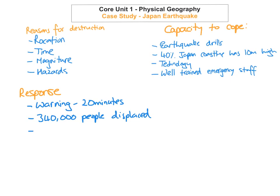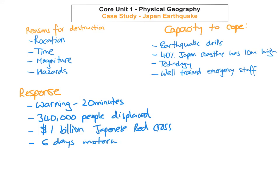They received up to 1 billion in donations from the Japanese Red Cross, which shows their ability to respond and help in a natural disaster. Within six days, they had the motorways cleared, which again shows their sheer response capacity and ability to recover rapidly when a natural disaster of this magnitude hits them.